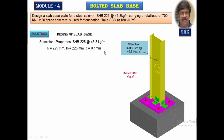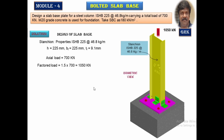The properties of ISHB 225 at 46.8 kg/m are: depth H = 225 mm, breadth of flange BF = 225 mm, and thickness of the flange = 9.15 mm, taken from SP61 or the steel table. Since the depth equals the flange width, this is a square column. We treat this dimension as square and can design a square base plate — even if the section is rectangular, a square plate can be designed with no problem.